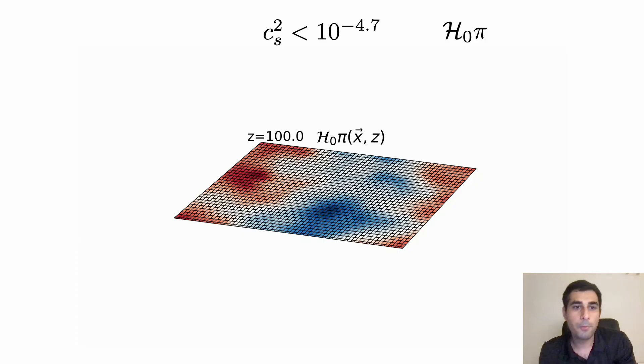We specifically see that when we have a small speed of sound for the k-essence, the evolution of the k-essence scalar field leads to an instability which is very localized and happens very suddenly in time.